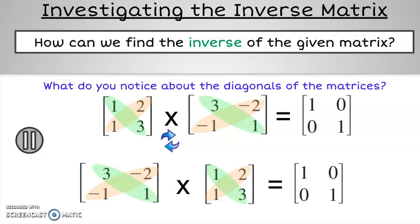We notice the values on the main diagonal switch places, while the values on the other diagonal stay in the same place, but change signs. Let's apply this learning to another example.